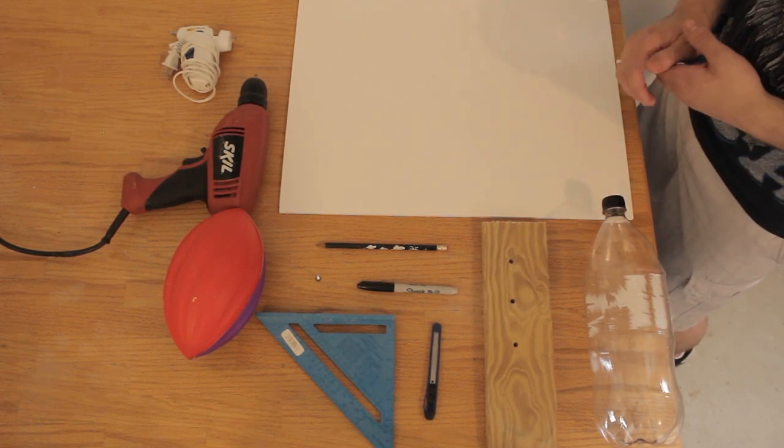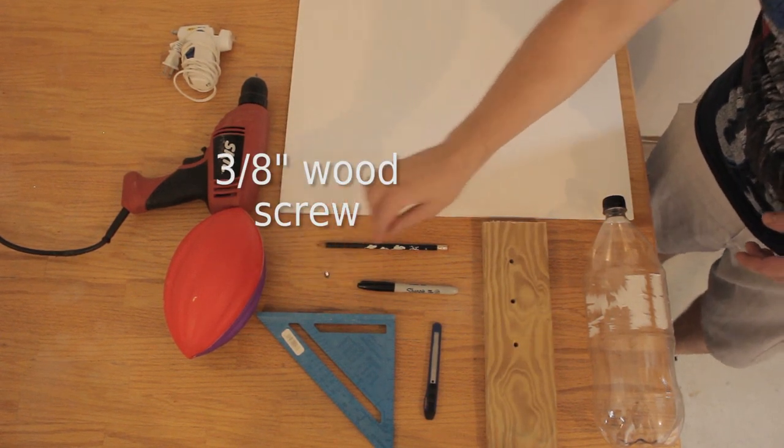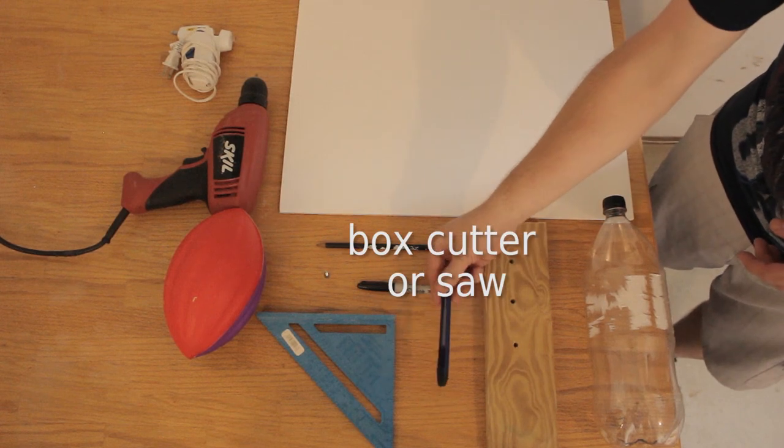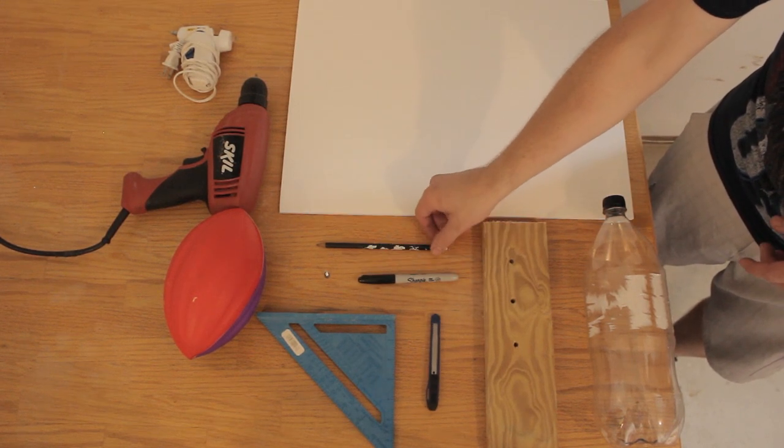Some of the tools we're going to need are a scrap piece of wood and a screw in order to build our assembly stand, a razor knife, a sharpie marker or some other type of permanent marker, and a pencil.